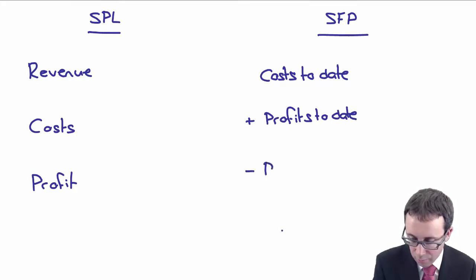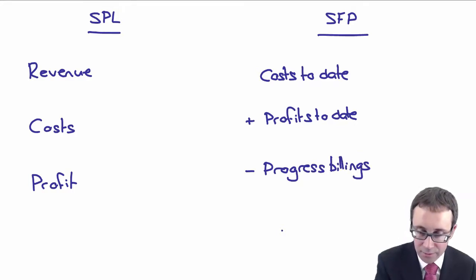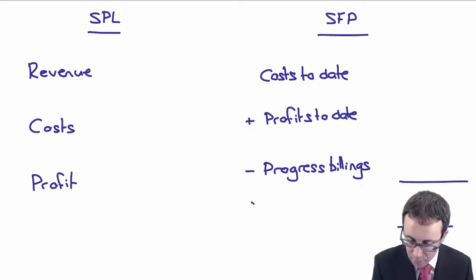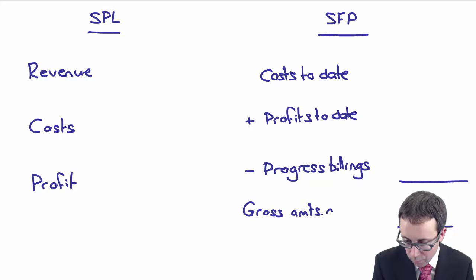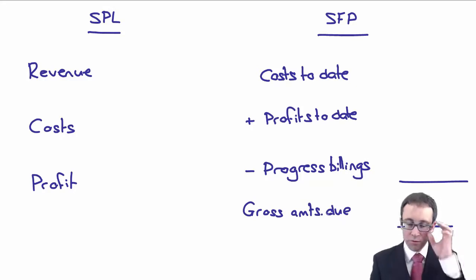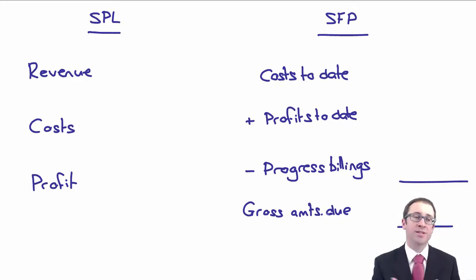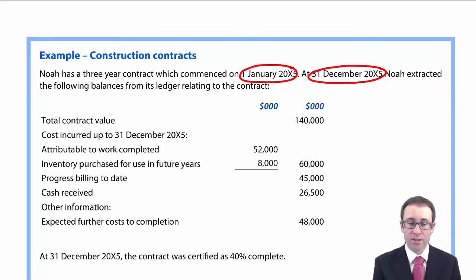And you deduct any progress billings. Those progress billings, once you have deducted them, give you your gross amounts due from your customer. The statement of profit or loss side is stuff that you've seen previously. So remember, what we need to do is establish if it is a profitable contract. So if we go back to the information, you've got your total contract value of 140.